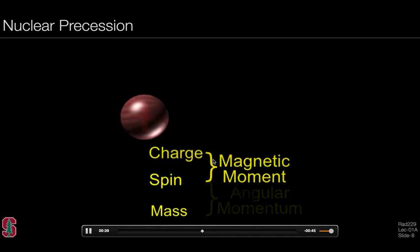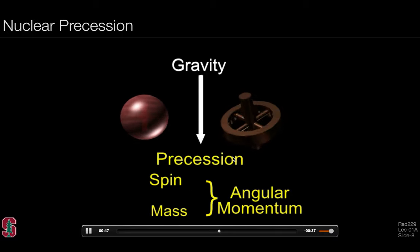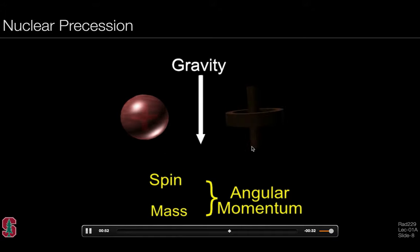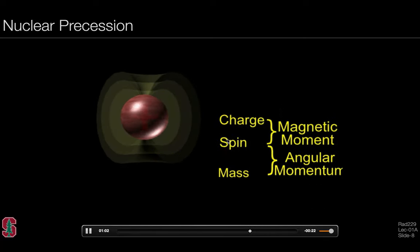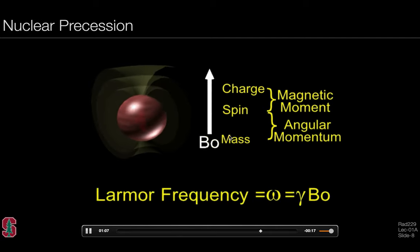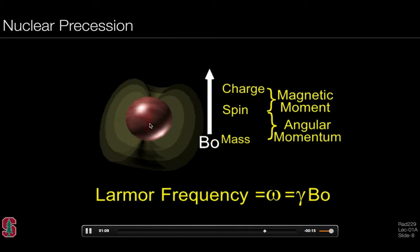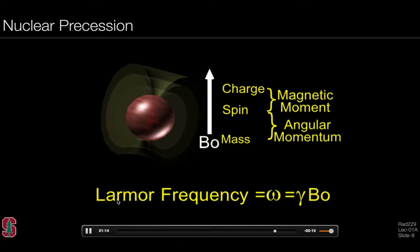In addition to spin and charge, the hydrogen nucleus also has spin and mass. As a consequence of spin and mass, you have angular momentum. As an example, a top will precess in a gravitational field; the hydrogen nucleus will also precess in the presence of a B0 field. The combination of spin, charge, and mass give rise to a magnetic moment and angular momentum. In the presence of a B0 field, the hydrogen nucleus is inherently precessing at a particular frequency called the Larmor frequency.